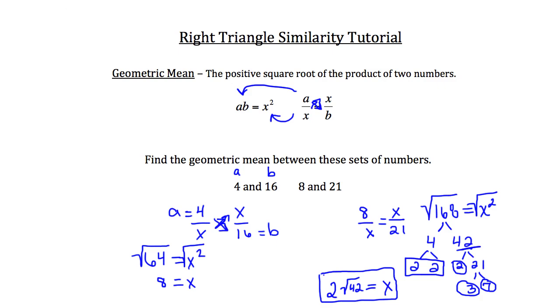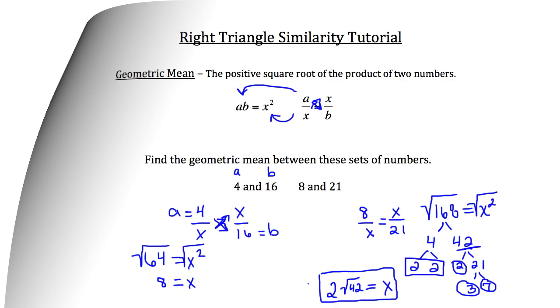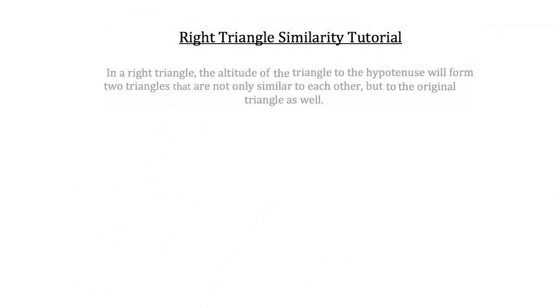Now that you have a little practice using the geometric mean, we're going to apply this to right triangles. In a right triangle, the altitude drawn to the hypotenuse will form two triangles that are not only similar to each other, but to the original triangle as well.